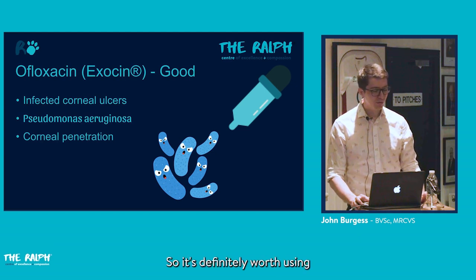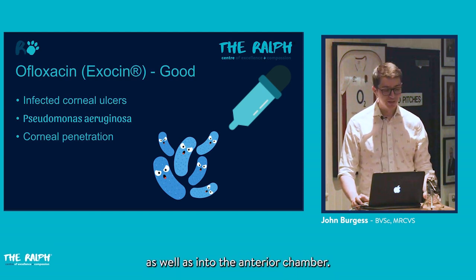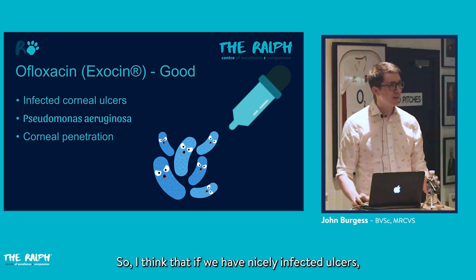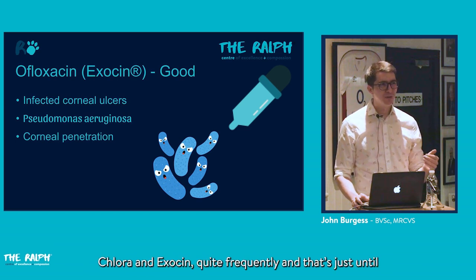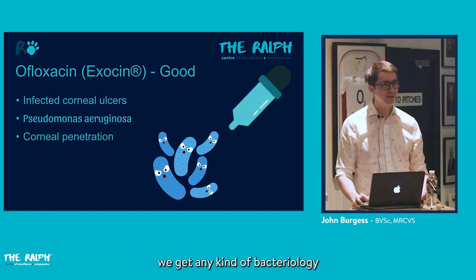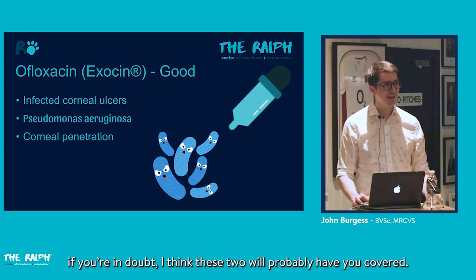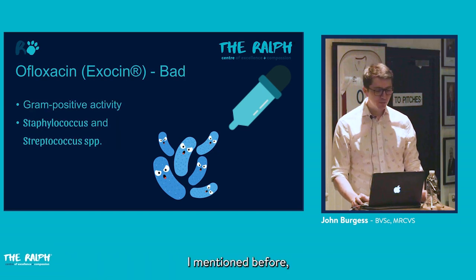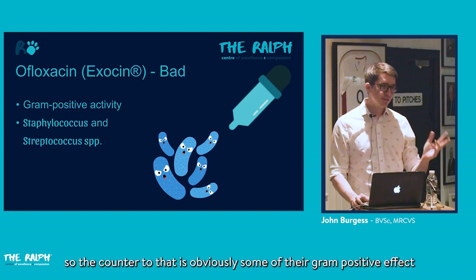Pseudomonas is actually very susceptible to ofloxacin most of the time — this is where it really comes into its own. It also has good corneal penetration into the anterior chamber, making it useful for corneal abscesses. For severely or meltingly infected ulcers, we'll often use both chloramphenicol and ofloxacin until bacteriology or cytology comes back.